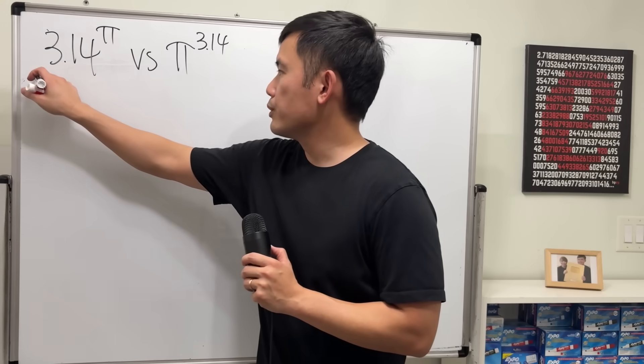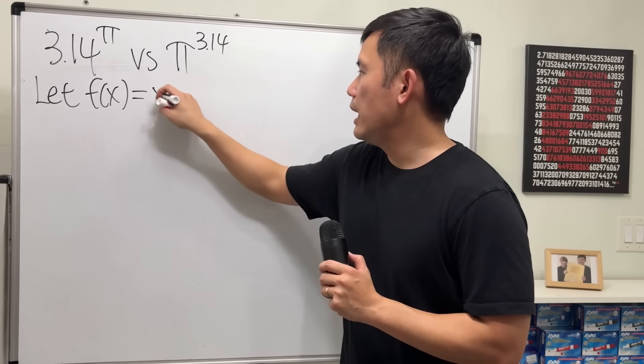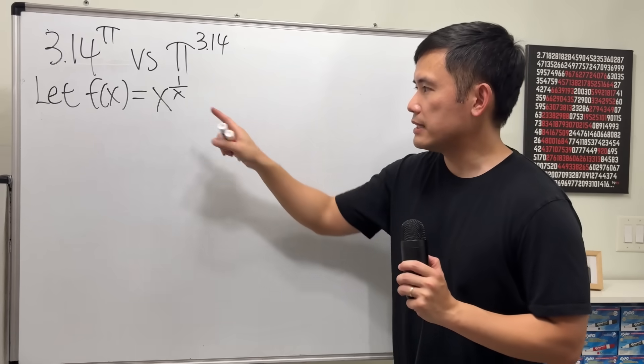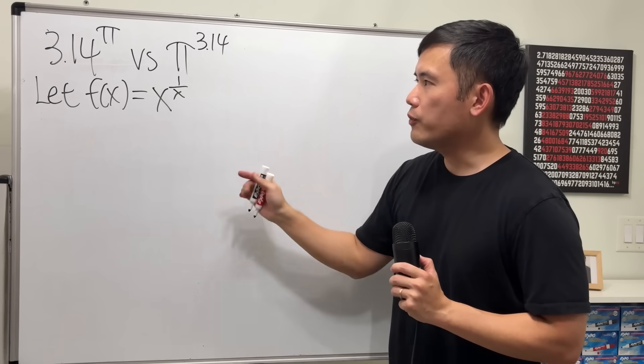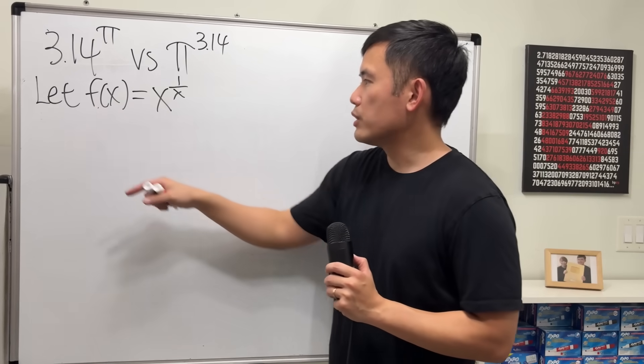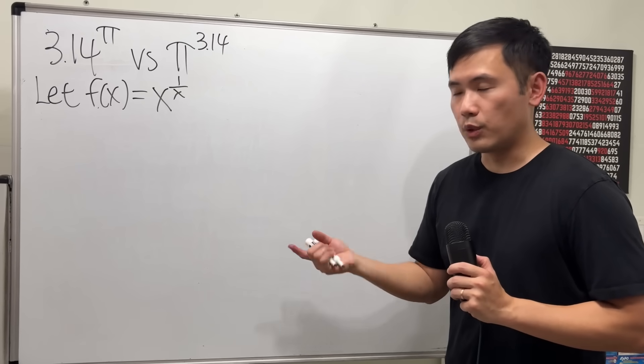And here's the calculus solution to do this. So first, I'm going to let f(x) be x to the 1 over x power. And the strategy is we'll try to find its absolute maximum. And hopefully from there, we can end up with some conclusions. And in order to find the absolute max, we should find the critical points. And to do so, we need the first derivative.